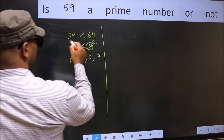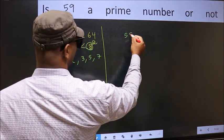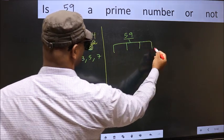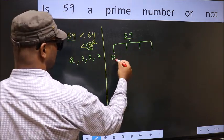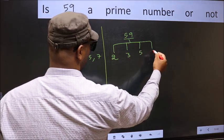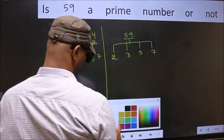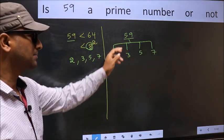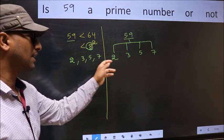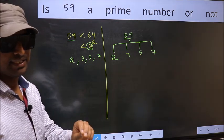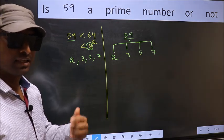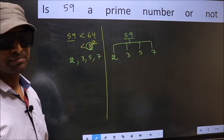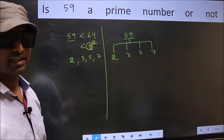Now, for the given number, you should check divisibility by these numbers. That is 2, 3, 5 and 7. If 59 is divisible by any one of these numbers, we say it is a prime number. Otherwise, not. Did you understand the method? Let us check the divisibility.